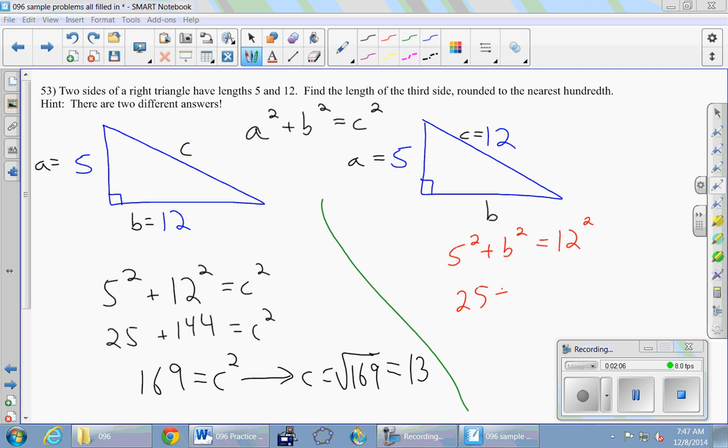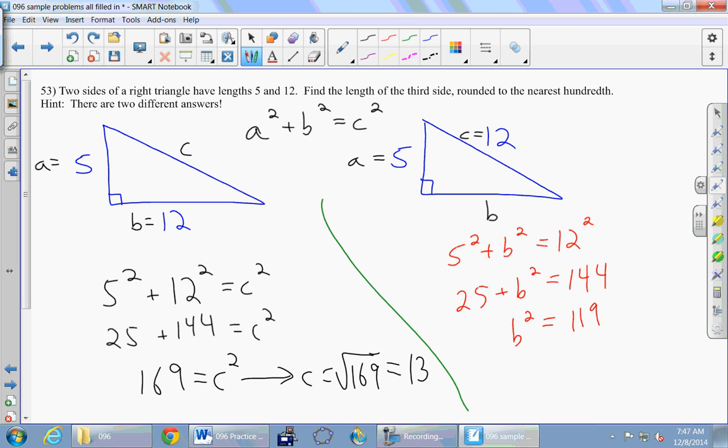25 plus b squared equals 144. Now we subtract the 25 from both sides. And then take the square root of both sides.